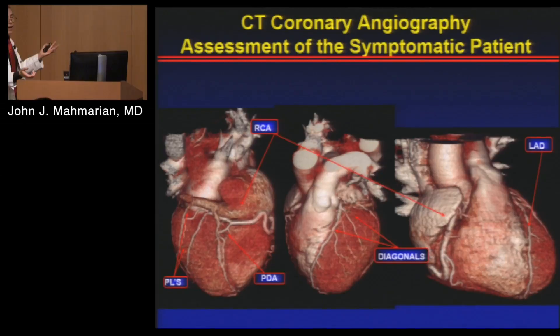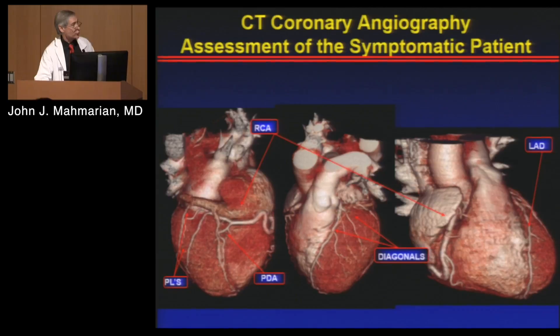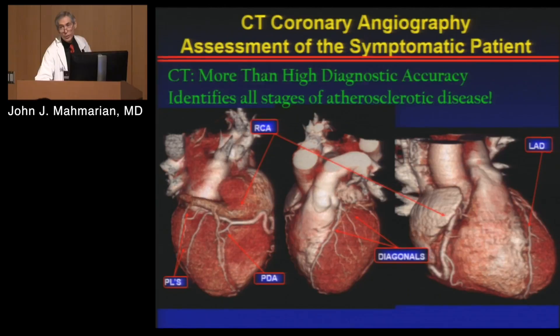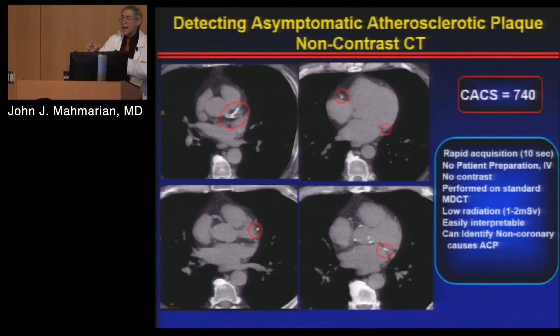Switching to CT: CT can give very nice images — 3D rendered volume pictures showing all the coronary arteries. One of the strengths of CT is that it identifies all levels of coronary atherosclerosis. Before talking about CT angiography, I'll mention calcium scoring. We recommend calcium scoring in asymptomatic patients — men over 40, women over 50 — who have at least one risk factor for coronary artery disease, because you simply cannot identify based on risk factors alone who would have coronary disease. You need a test.